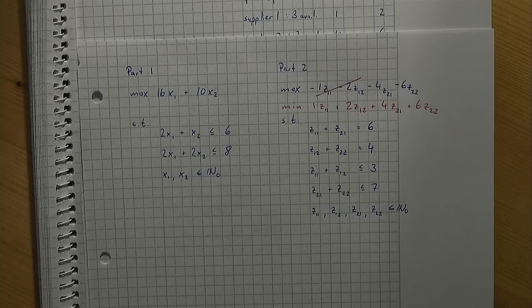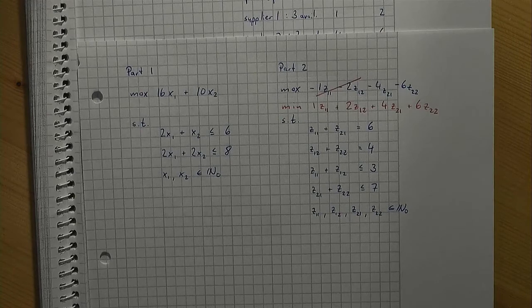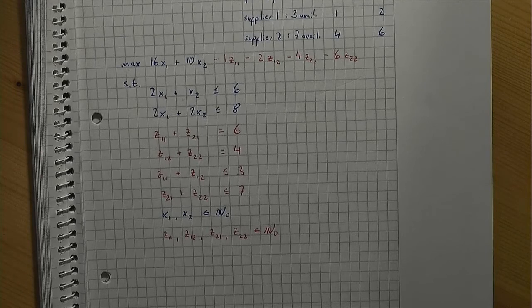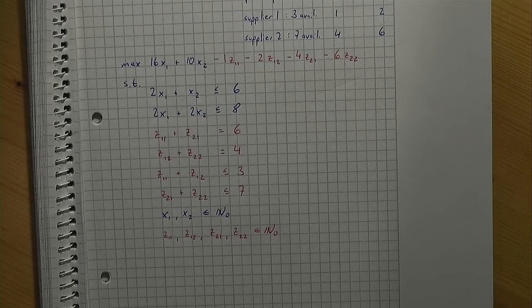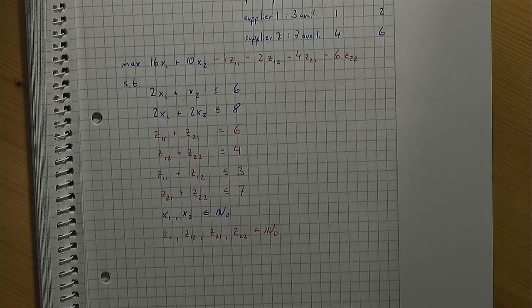Now that we understand this, let's modify our problem slightly. We have assumed that we know that we want to order six 2x4s and four pairs of 2x2s from the suppliers.